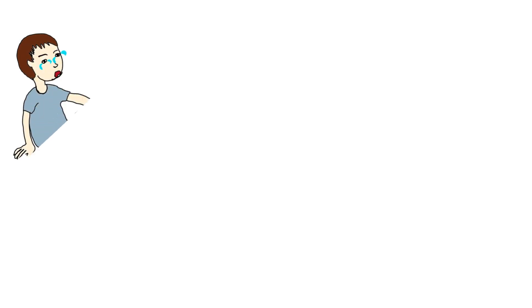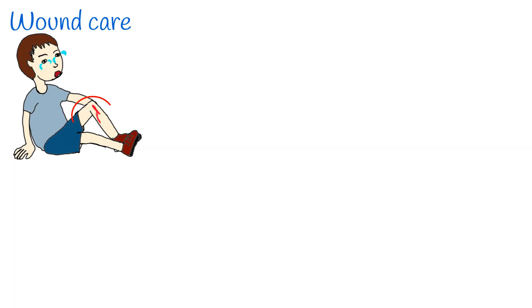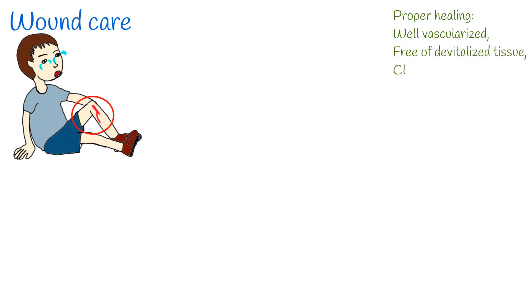A wound is a disruption of the normal structure and function of the skin and soft tissue architecture. The main principles of proper healing are that it should be well vascularized, free of devitalized tissue, clear of infection, and moist.